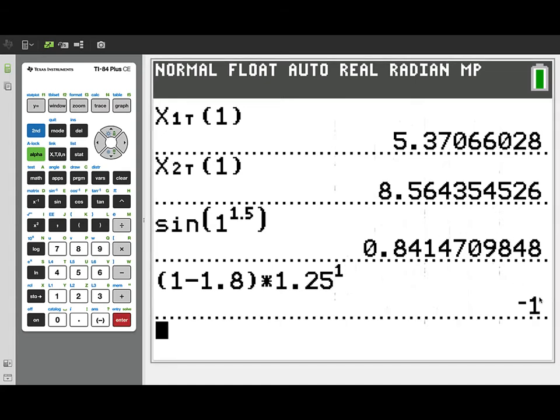And that is going to evaluate to be negative 1. So given that particle Q is to the right of P moving to the left, while P is moving to the right, they're definitely moving toward each other.